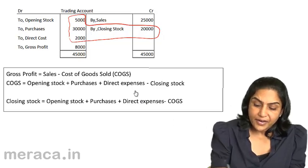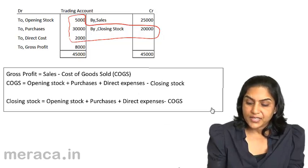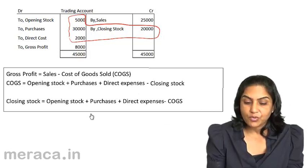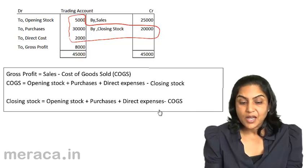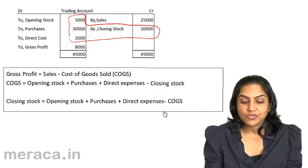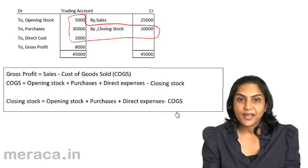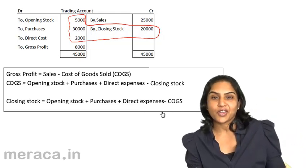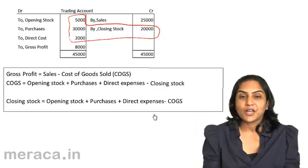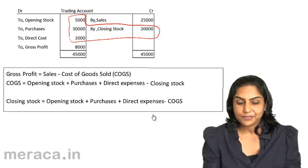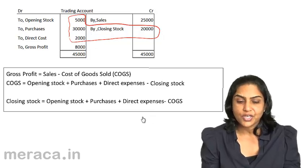Rearranging the same equation, we can say that closing stock is equal to opening stock plus purchases plus direct expenses minus the cost of goods sold. These equations are extremely handy in solving and computing several problems related to the valuation of inventories associated with this topic.